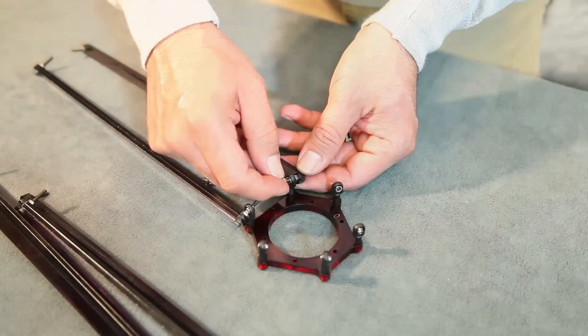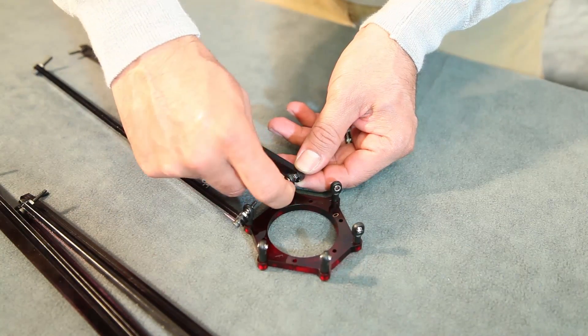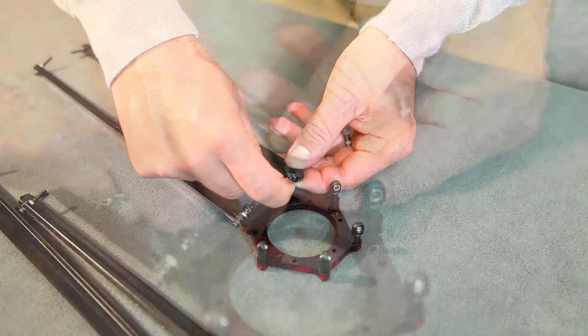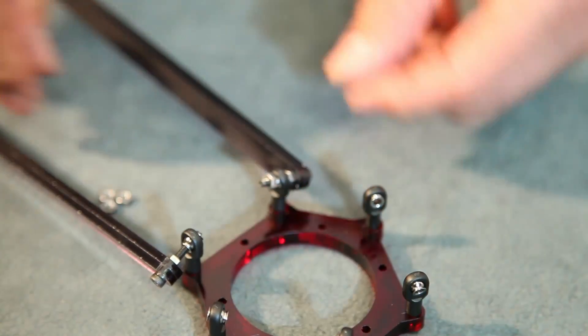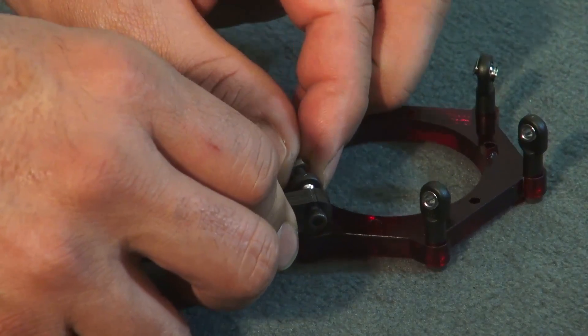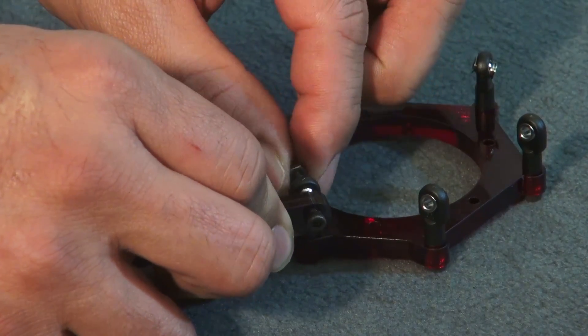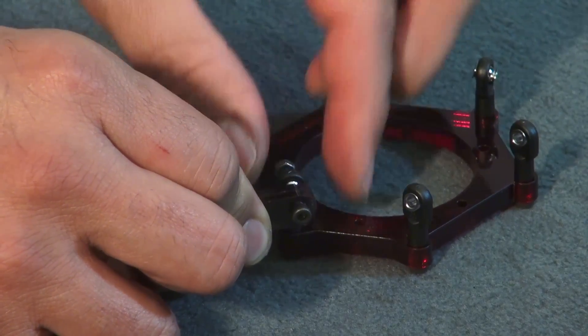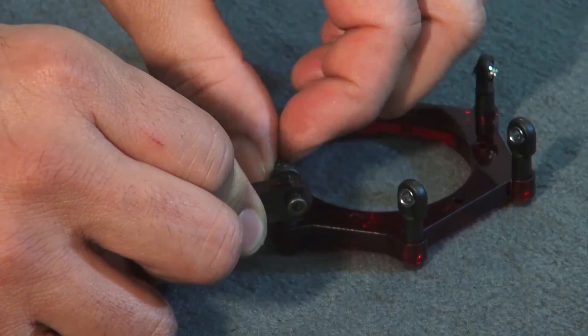So when you get these in there, attach a bolt, attach the nut to the bolt, tighten it firmly. And you want to complete all six arms onto the centerpiece.